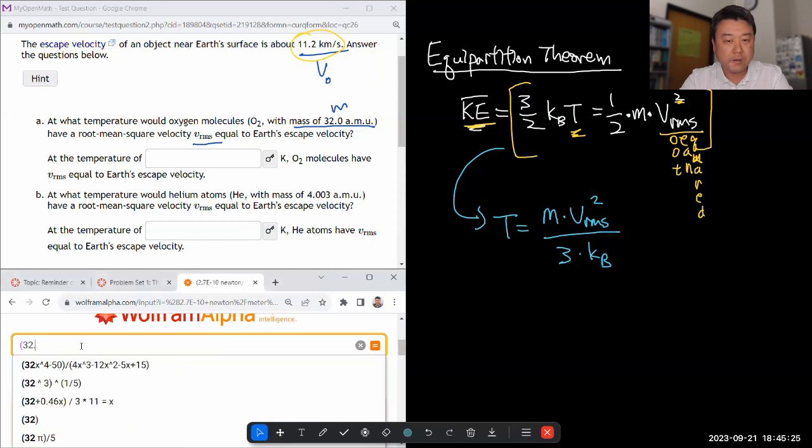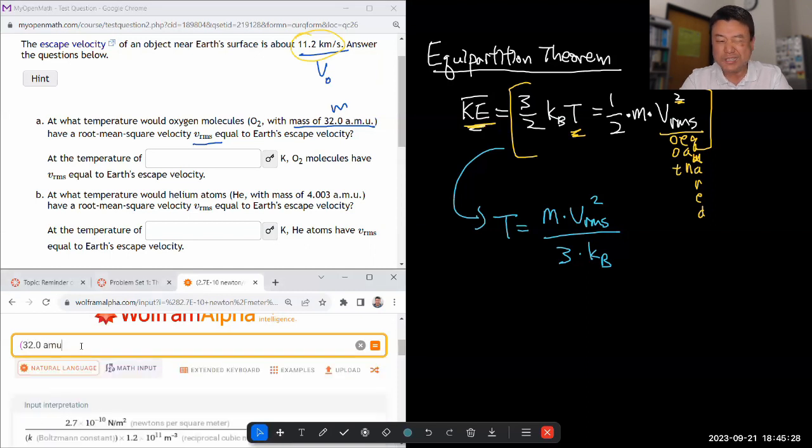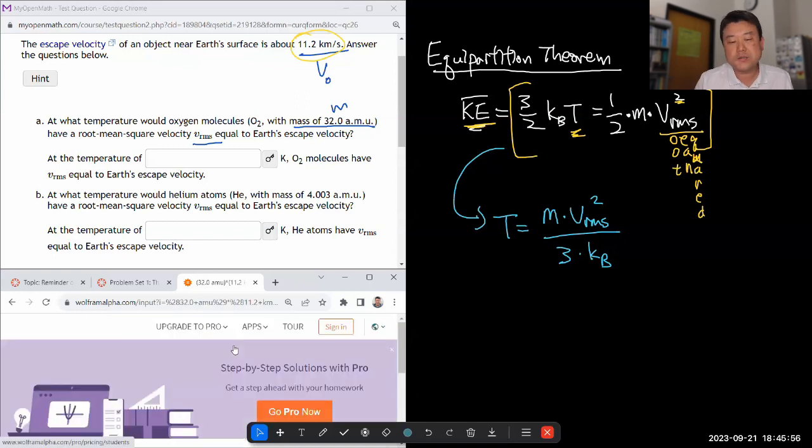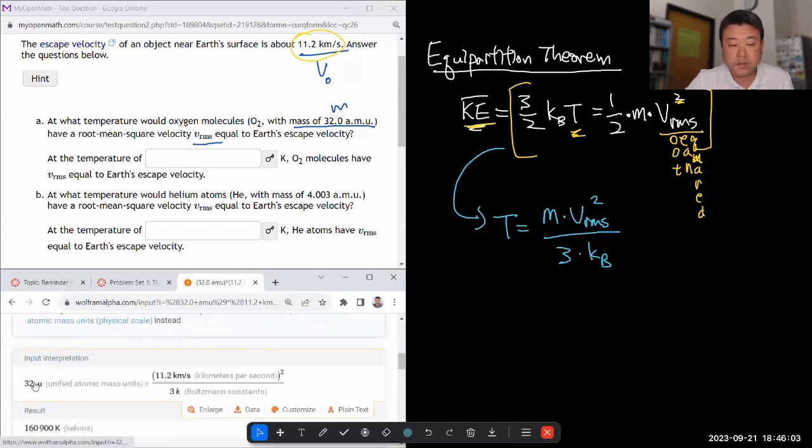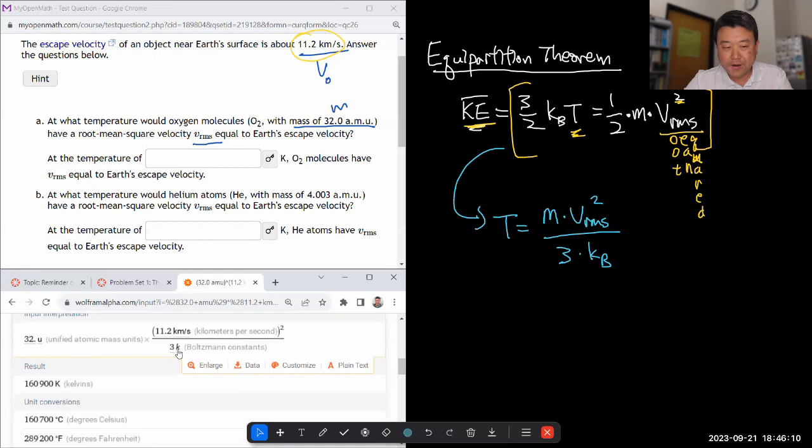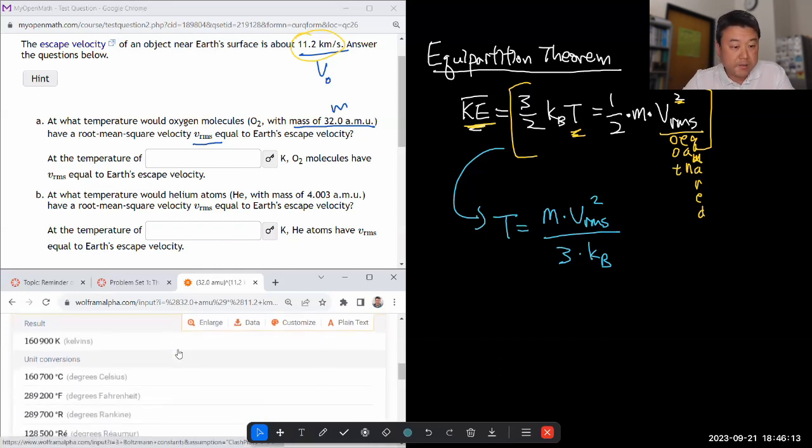Let me just plug everything in. Mass 32.0 atomic mass units, times the speed that we're using, 11.2 kilometers per second squared, divided by three times Boltzmann constant. Now, if you're using any other regular dumb calculator, you should not be doing what I'm doing. You should be converting this to kilograms, this to meters per second, and looking up the constant. I can do what I do because Wolfram Alpha is a smart calculator. It'll do the unit conversion for me.